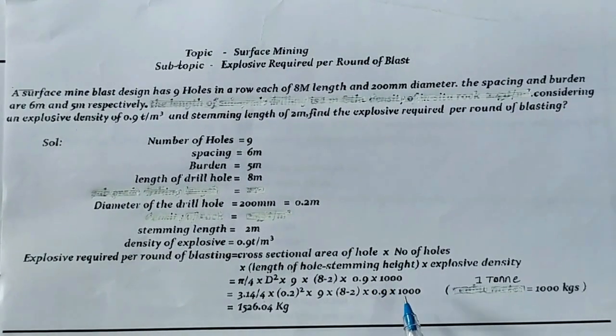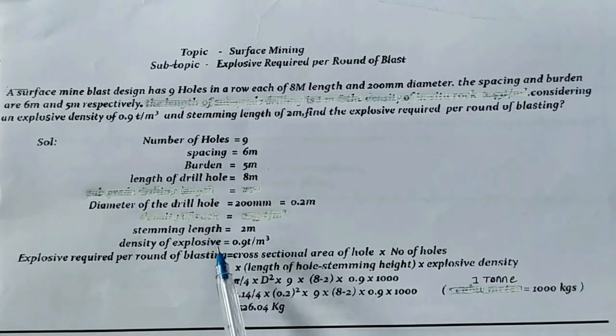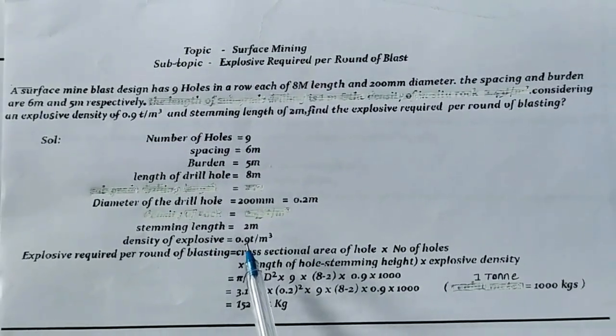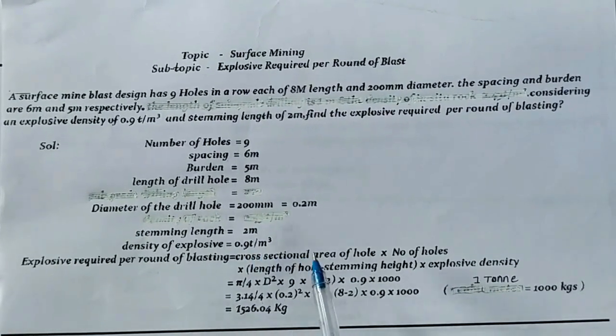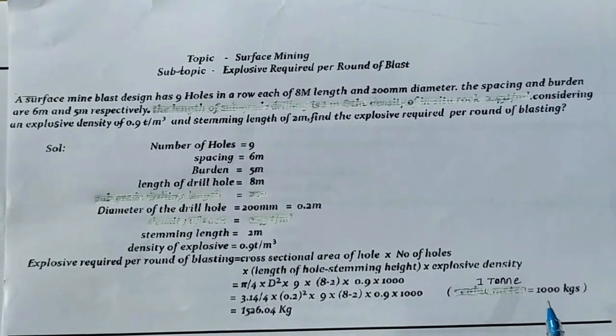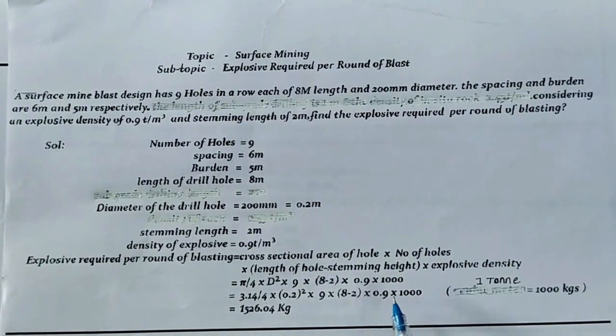The 0.9 is multiplied by 1000 to convert tons to kilograms. Since the density of explosive is 0.9 tons per meter cube and 1 ton equals 1000 kg, we multiply by 1000.